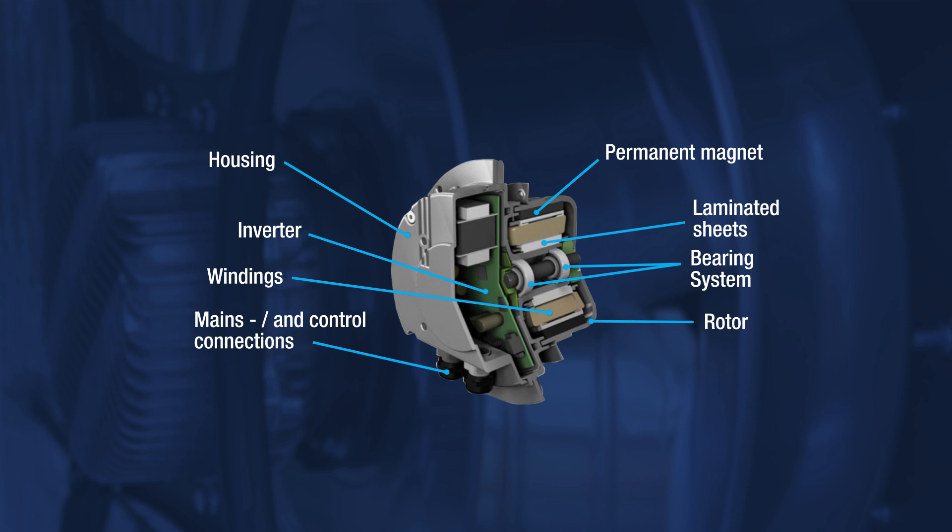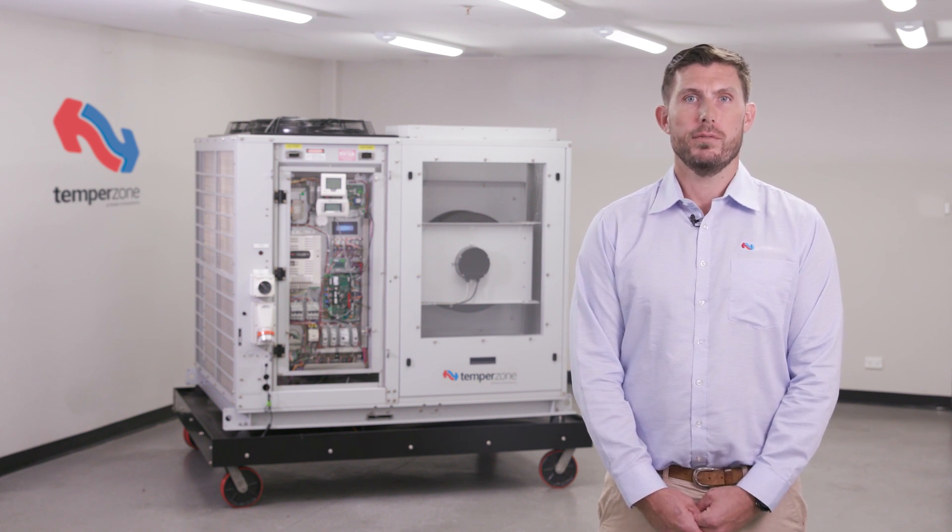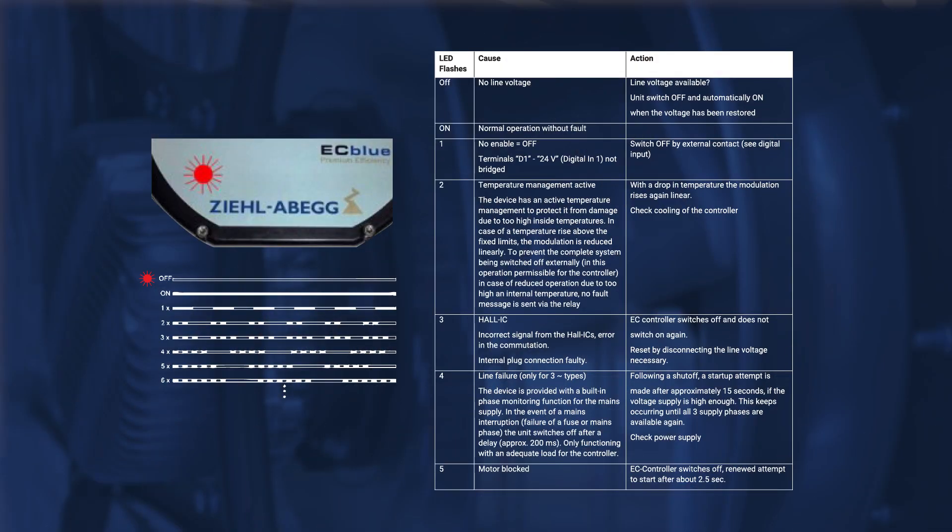Electrical testing of motors with internally mounted inverters is impossible due to the terminals being electrically isolated from the motor windings due to the inverter. Do not use a megaohm meter on these terminals as this risks damage to the inverter. For fault identification refer to the manufacturer's LED fault indication lights. These can be found in the TempoZone service training manual.